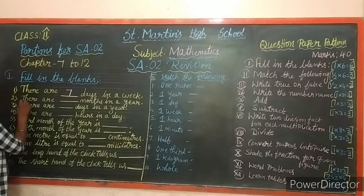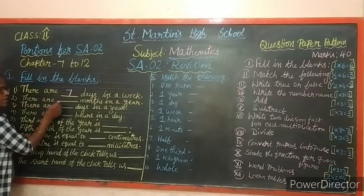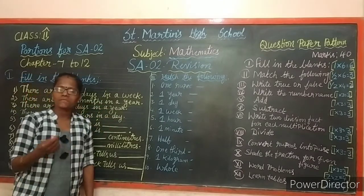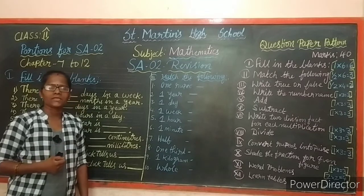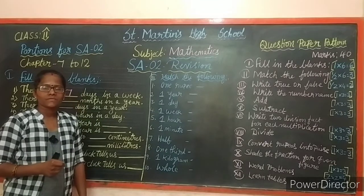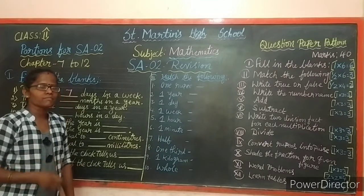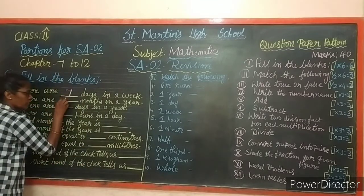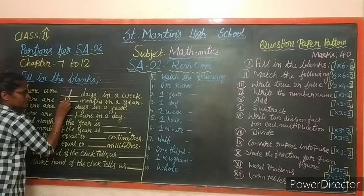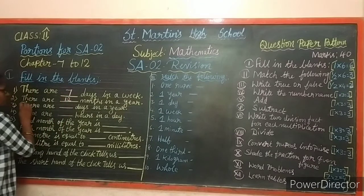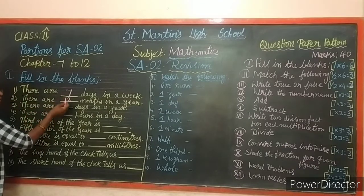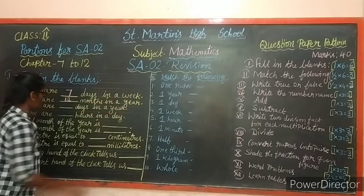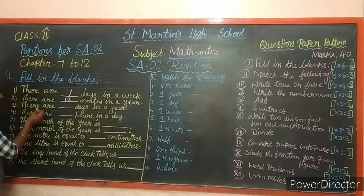The next one: there are dash months in a year. How many months are there in a year? 12 months. There are 12 months in a year.